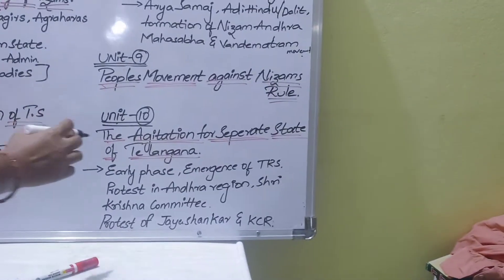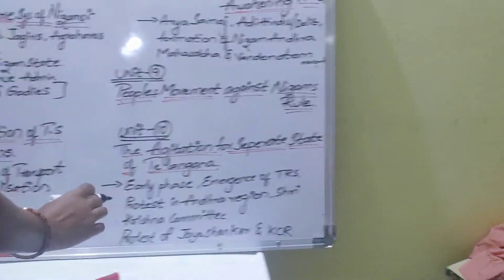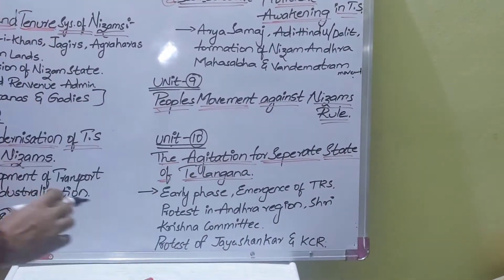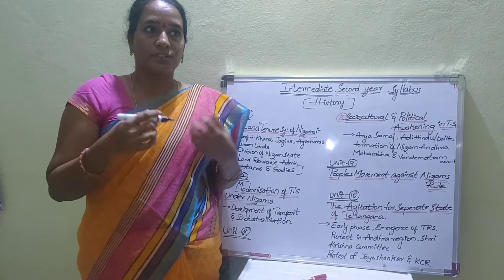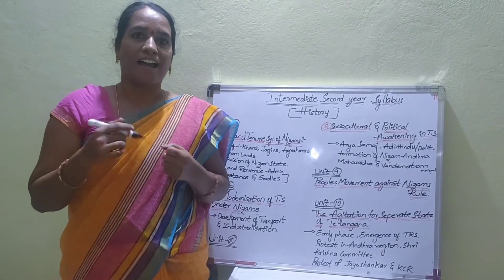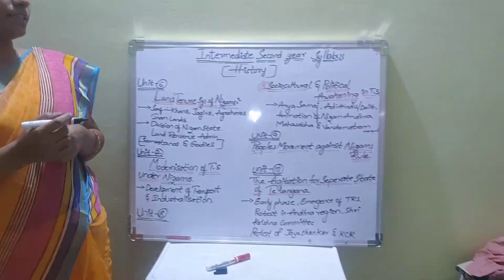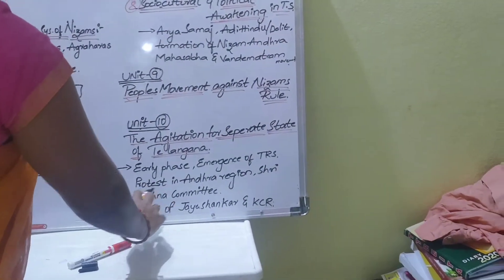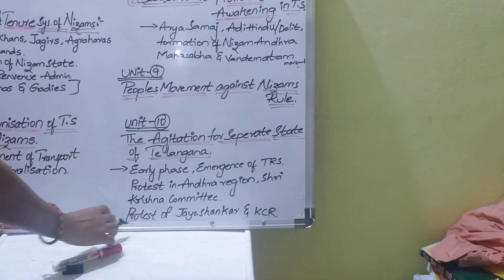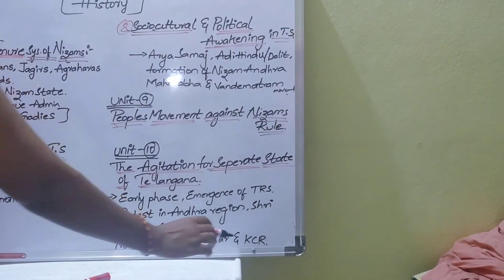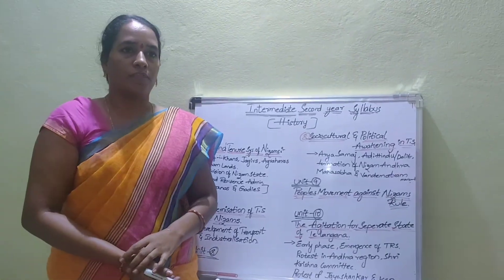The tenth chapter is the agitation for a separate state of Telangana. It covers the early phase of 1969, the emergence of TRS, protest in the Andhra region, the Sri Krishna Committee, protests of J.S.N. Kassar and KCR, and all protests in Telangana leading to the formation of the Telangana state.